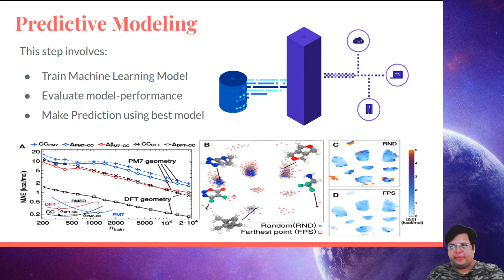At last, we come to predictive modeling. It involves training machine learning models, evaluating model performance, and making predictions using the best model. First we take a base model - a normalized model that's okay for the task.